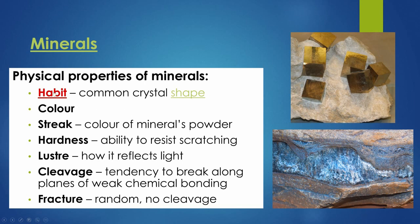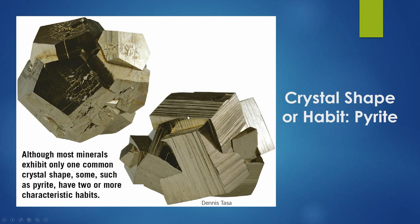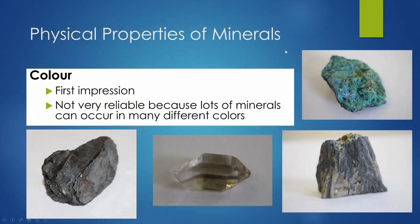Here's pyrite — sometimes they form in a couple of different shapes. These are our cubes, and these form in another shape — some kind of hedron. Physical properties of minerals: how do we identify them from each other? Color is the first impression, but unfortunately color is not very reliable; lots of minerals can occur in many different colors.